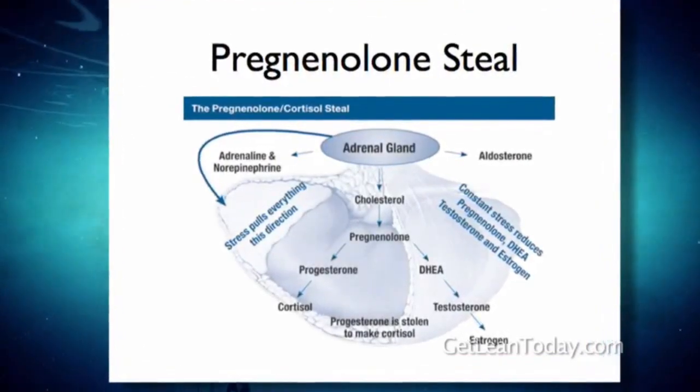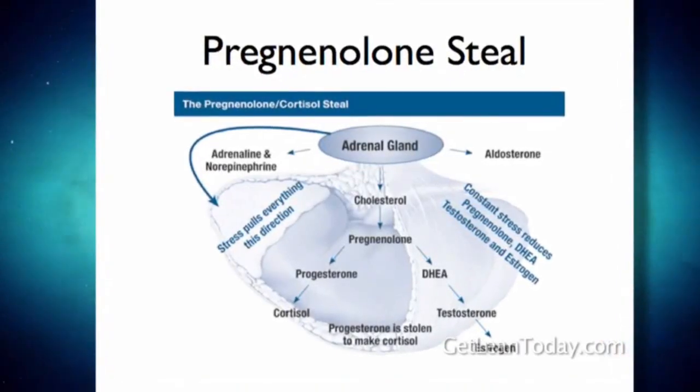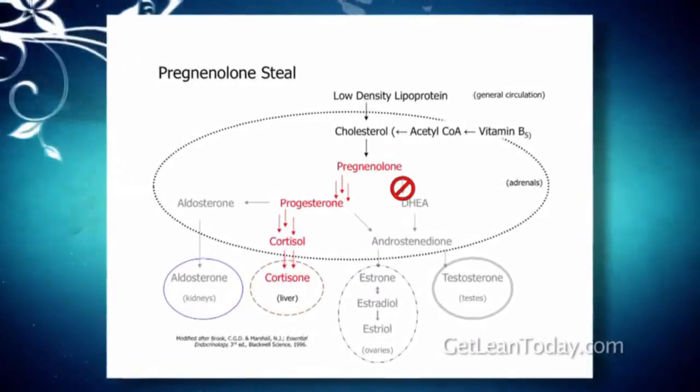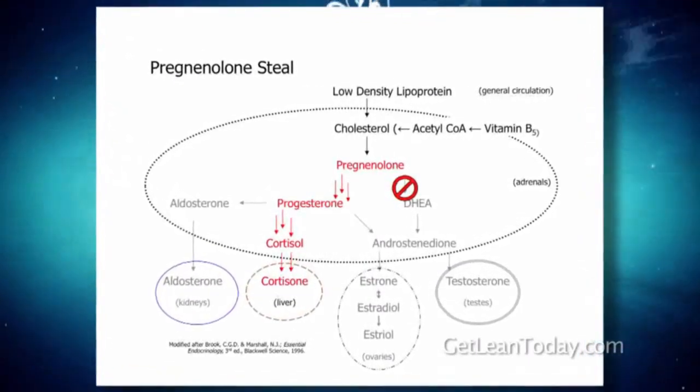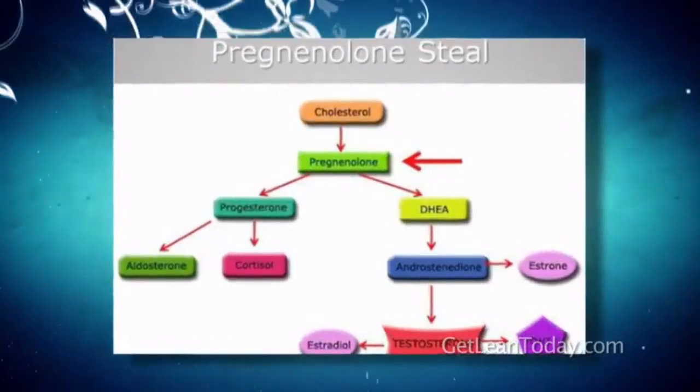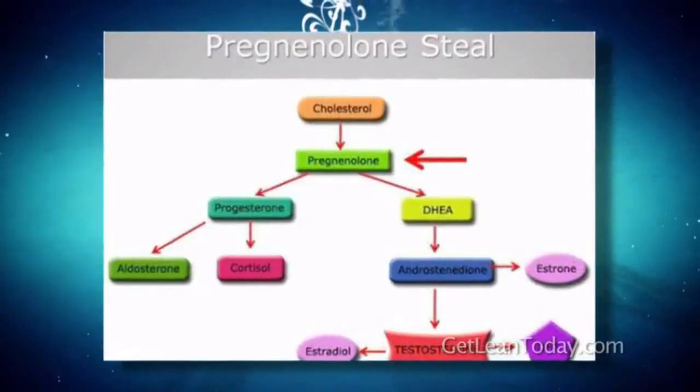Pregnenolone is diverted down towards cortisol because cortisol is the main stress hormone. So under stress, you have this huge amount of cortisol production — cortisol levels will spike way up — and you can see how there's less available progesterone for DHEA, estrogen, and testosterone production. This pathway is referred to as pregnenolone steal because the pregnenolone is stolen or diverted away to cortisol production when you're under chronic stress.